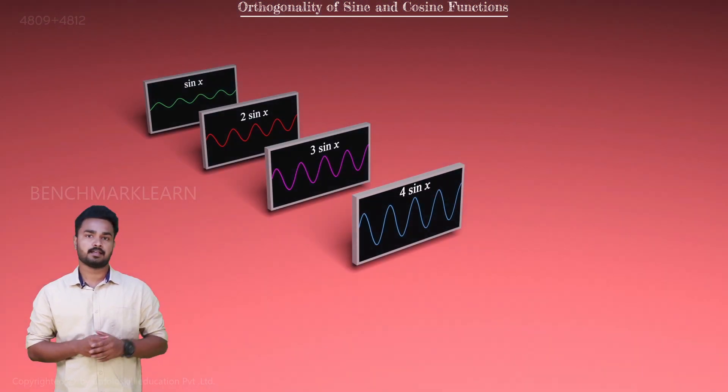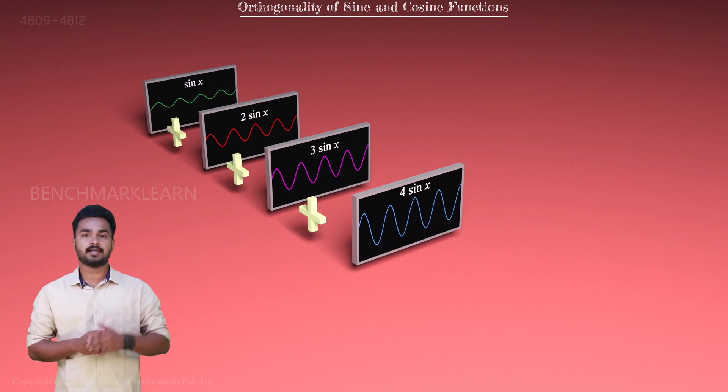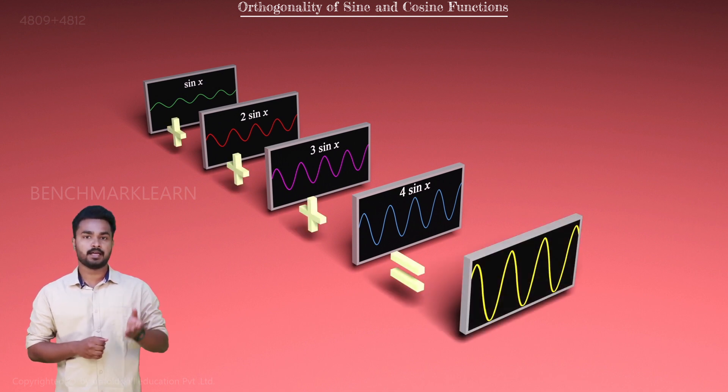Consider some sine functions: sine x, 2 sine x, 3 sine x, and 4 sine x. Here, their amplitude varies from 1 to 4 but the frequency remains the same. If we add them, we get another sine function whose frequency remains the same but amplitude changes.